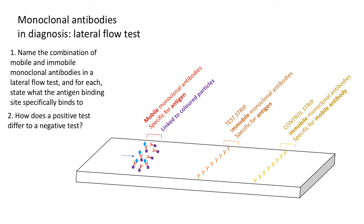The mobile monoclonal antibody, in combination with the antigen if it is present, then moves along the absorbent material and wicks along to the test strip. The immobile monoclonal antibodies at the test strip are specific for the antigen, so the antigen — already bound to the mobile monoclonal antibody — can also bind there. The mobile antibody is stopped at the test strip because the antigen binds to the immobile monoclonal antibody, and this is seen as a line at the test strip — a positive result.